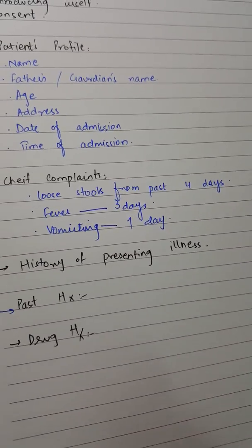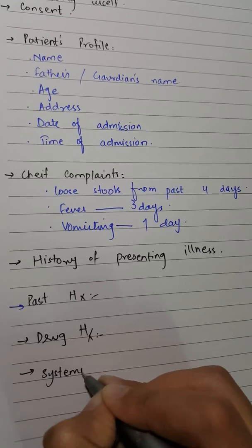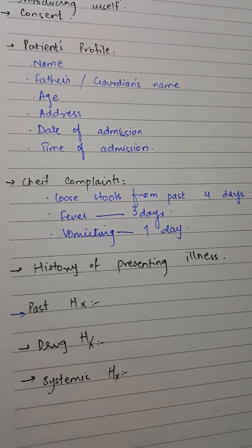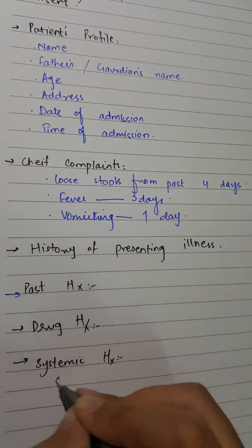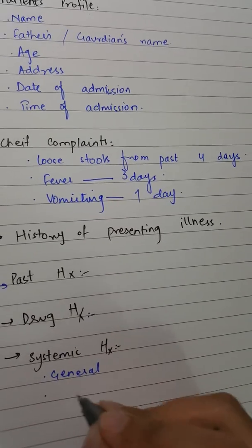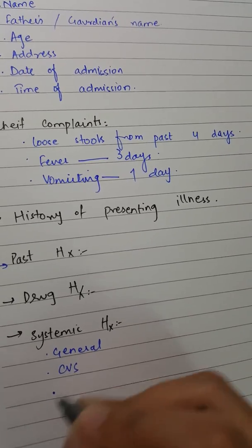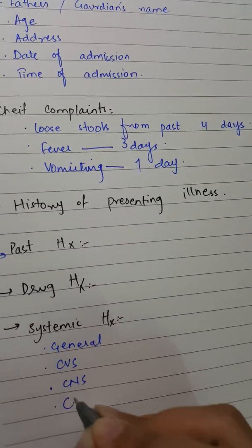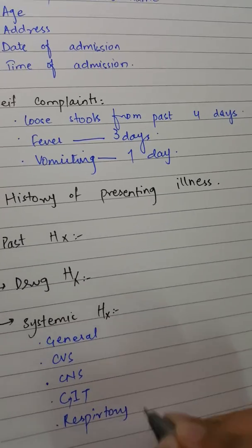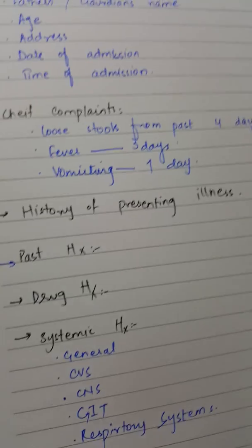The next major heading is systemic history. In systemic history, you ask for general history that includes weight, appetite, and so on. You also ask about CVS (cardiovascular system), CNS, GIT, and the respiratory system — whether the patient has any problems in these systems relevant to the presenting complaints.